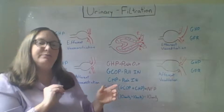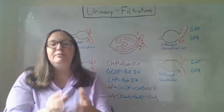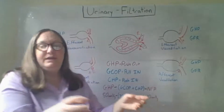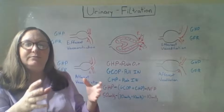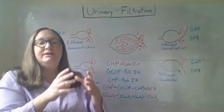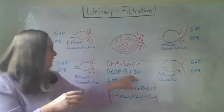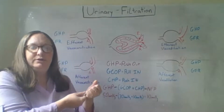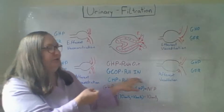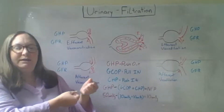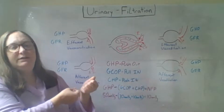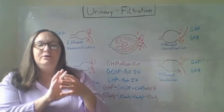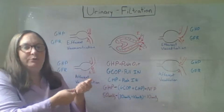Glomerular colloid osmotic pressure — this is where albumin is really significant, along with other solutes that are not getting filtered. They are creating this colloid osmotic pressure within the blood vessel. Colloid osmotic pressure is an inward pull, so this is going to be pulling the filtrate back in. Remember, water is going to travel to where there are more solutes, so this is an inward pull.